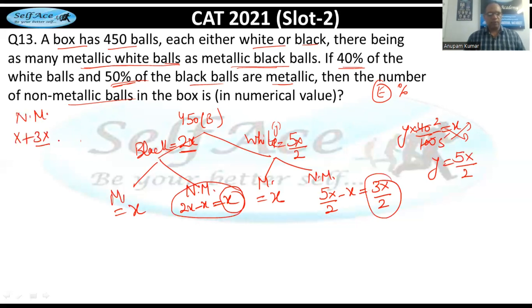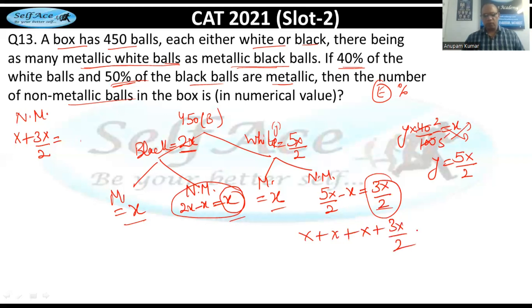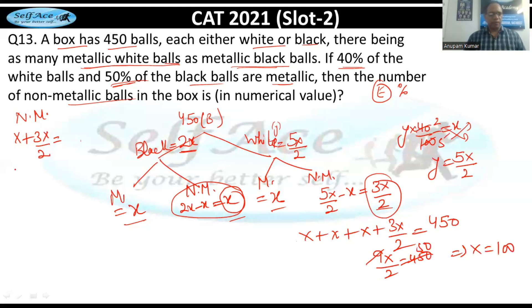Total balls = metallic white + metallic black + non-metallic white + non-metallic black = x + x + 3x/2 + x = 450. Combining: 9x/2 = 450.